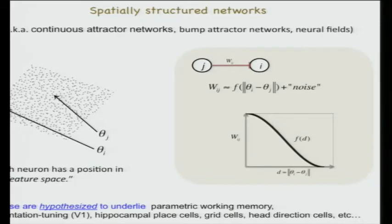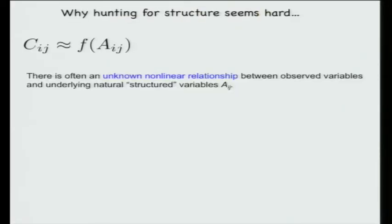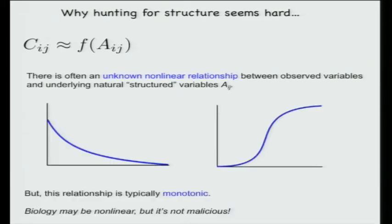Why isn't detecting this structure trivial? If someone gave you the matrix, why can't you immediately say it comes from a spatial organization? The data comes as matrix cij, which is approximately a function f of the distances in the metric space, but f is unknown—the only thing known about it is that it is monotone.